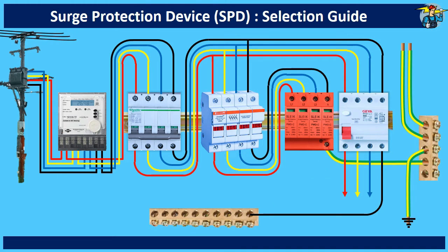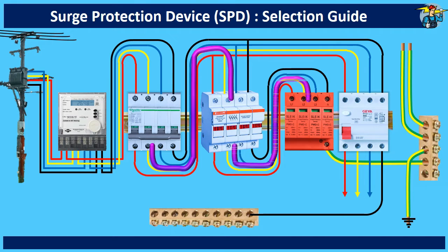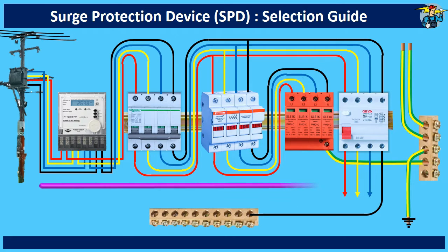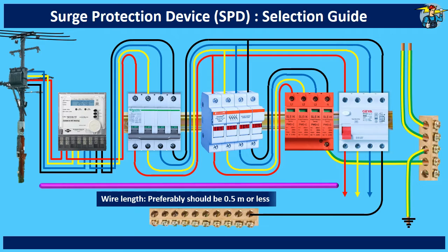To gain maximum effective protection from an SPD, the connecting conductors should be kept as short as possible. This will keep additional inductive voltage drops across the conductors in the SPD connection cables to a minimum. According to the standards, it is defined that for an SPD installed in parallel, the cable lengths from the main breaker to the ground bar must not exceed 0.5 meters.